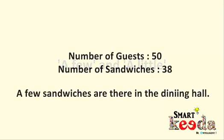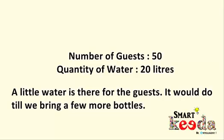Now let's understand the difference between 'a few' and 'a little.' At a party with 50 guests and 38 sandwiches available, we'll say 'a few sandwiches are there in the dining hall.' Here 'a few' suggests there are positively some sandwiches which can be had by the guests. Next, if for 50 guests 20 liters of water is available, we'll say 'a little water is there for the guests — it would do till we bring a few more bottles.' Here 'a little' suggests that with 20 liters the guests won't remain thirsty while we provide more.